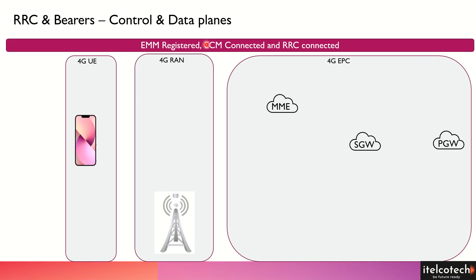Let's understand the bearers — what are the different kinds of bearers present in 4G and what is the disaggregation between the control and data plane. Here we can take an example of when the user is in a connected mode, in the RRC connected mode, and how the connectivity looks like.